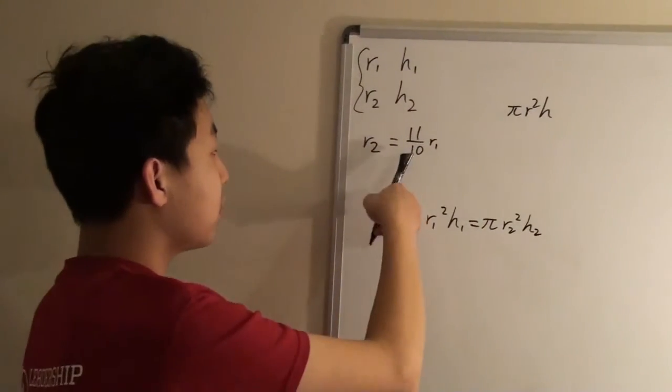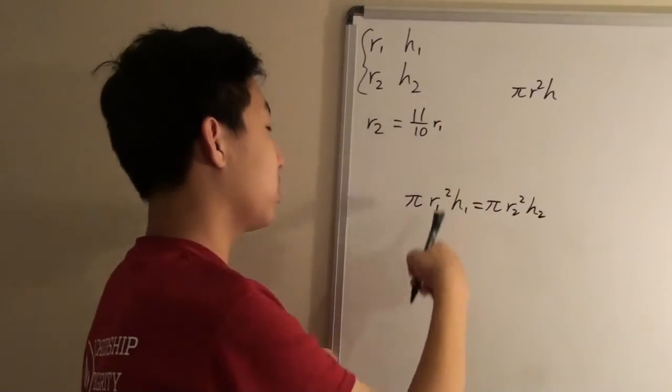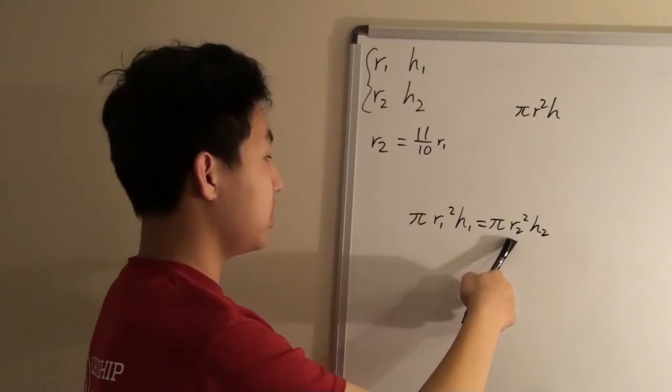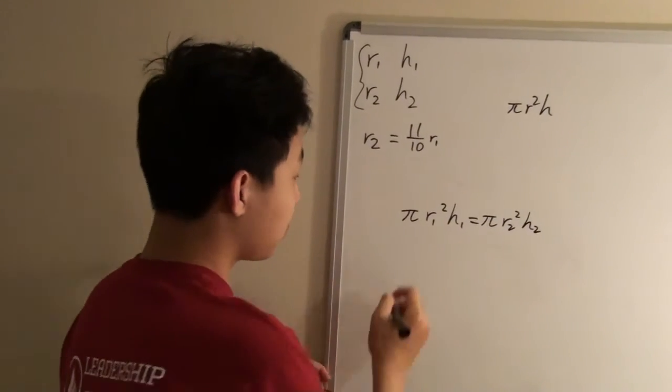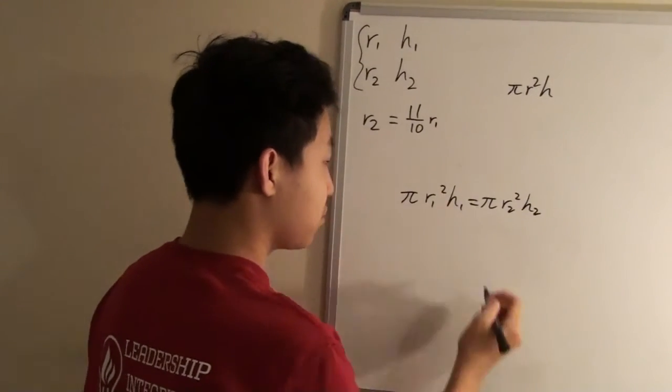Now we can plug in 11/10 × r₁ for r₂ on the right side of the equation and cancel out π.